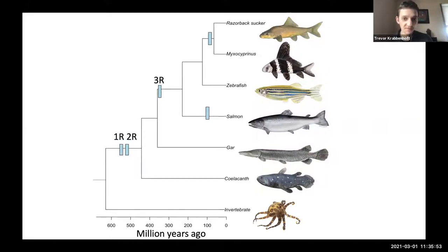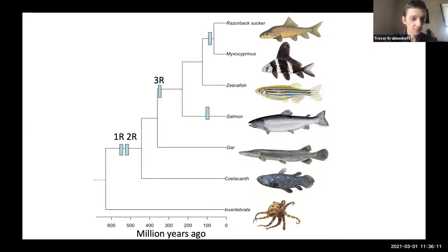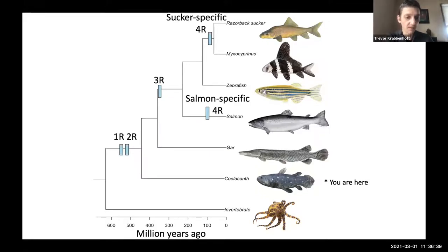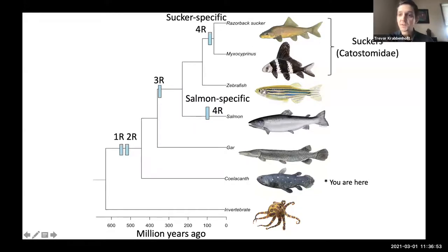This is a phylogeny of vertebrates through a fish-specific lens. These organisms have undergone a series of whole genome duplications. The 1R and 2R are most familiar to humans. The most famous fish-specific duplication is the 3R or teleost-specific duplication shared by ~20,000 teleost species. A number of fish lineages have undergone a fourth or subsequent round — most famously the salmon-specific duplication, and also the suckers or catostomids, which have their own independent whole genome duplication event around 60 million years ago.